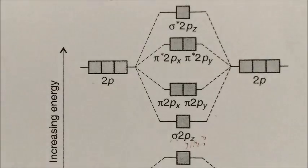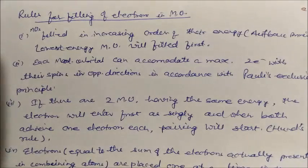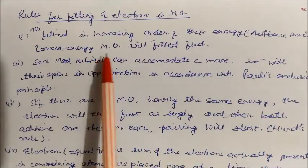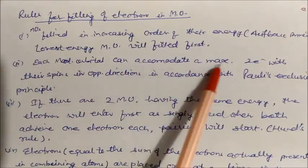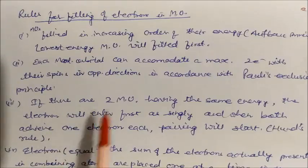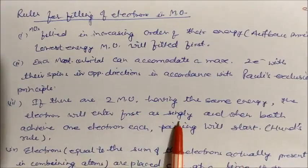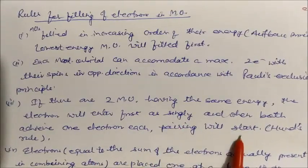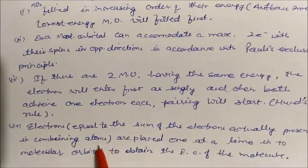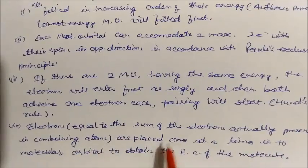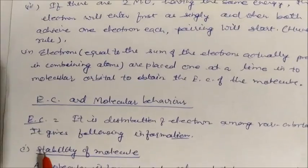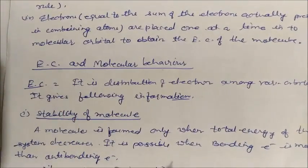It is important to keep this energy ordering in mind when writing the molecular orbital configuration. The rules for filling electrons in molecular orbitals are: (1) Aufbau rule — fill in increasing order of energy; (2) Pauli exclusion principle — each molecular orbital can accommodate a maximum of two electrons with opposite spins; (3) Hund's rule — if two molecular orbitals have the same energy, electrons enter singly first, then pairing starts. Total electrons equal the sum of electrons in the combining atoms.